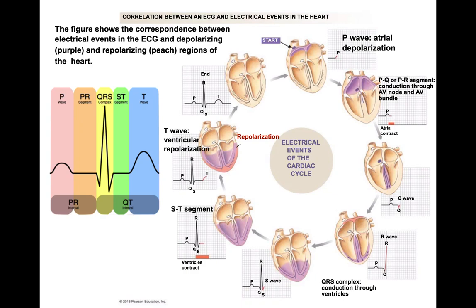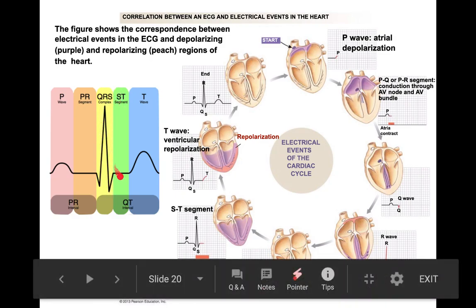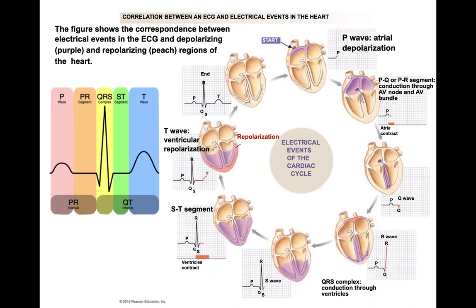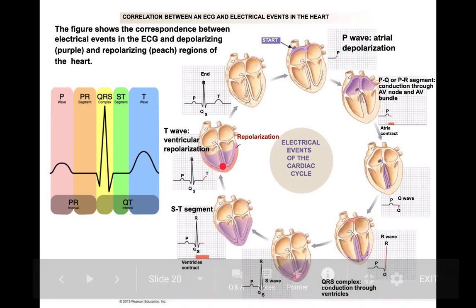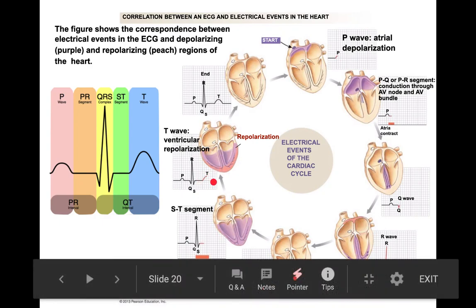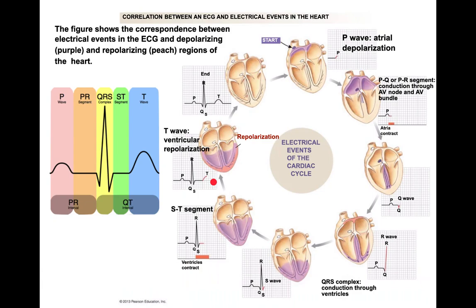Anytime you hear QRS, think ventricular depolarization — huge spike. After the ventricles depolarize, there's a lack of electrical activity as the ventricles finish contracting. Finally, after the ventricles have contracted, they begin to repolarize — shown in red — and that generates the final bump, which we call the T wave.